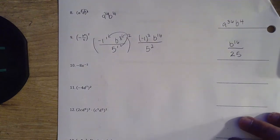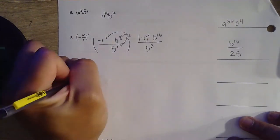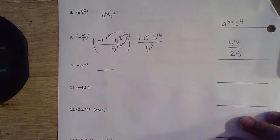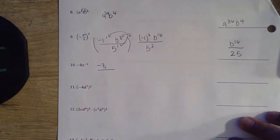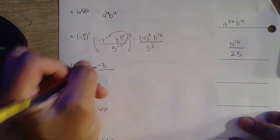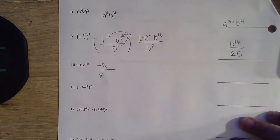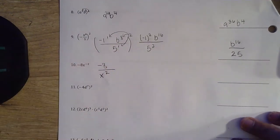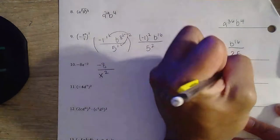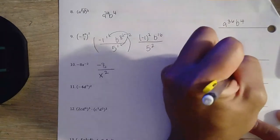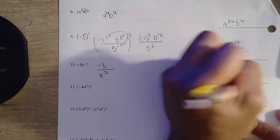Question number 10. We see a negative exponent — good idea to make a fraction. Negative 8 is just a number, not a negative exponent, so we leave it in our numerator. x to the negative 2nd power, we bring it down and make it a positive. That's our final answer: negative 8 over x squared.